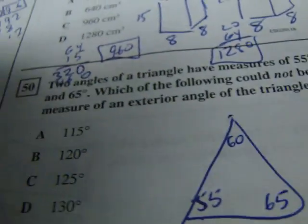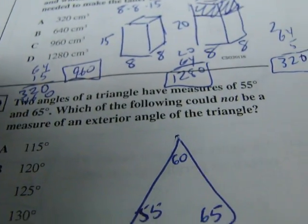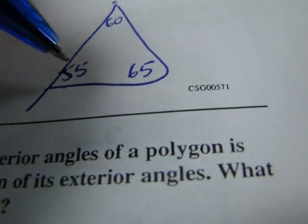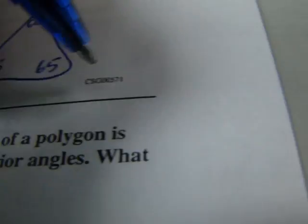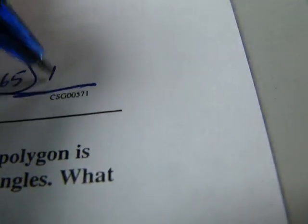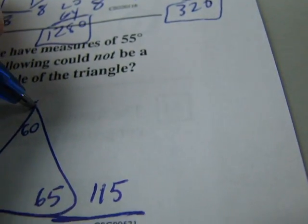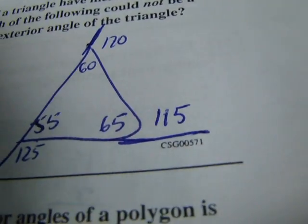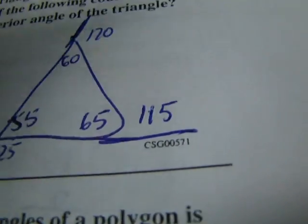So the question is kind of tricky. It says which could not be a measure of an exterior angle. Well the exterior angle to the 55 would be 125. The exterior to the 65 would be 115. And the exterior to the 60 would be 120. These are all linear pairs so they add up to 180. That's how I find those.